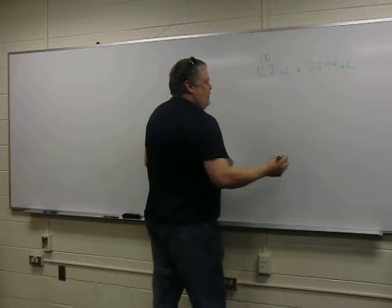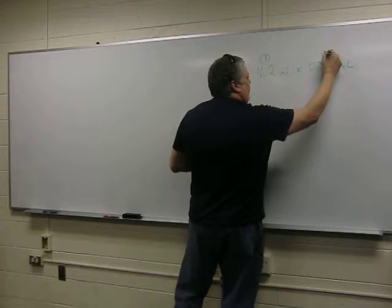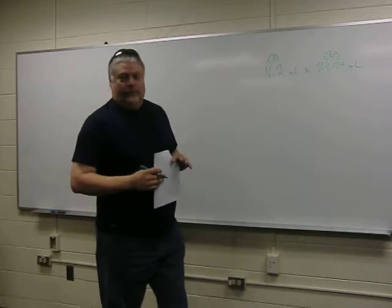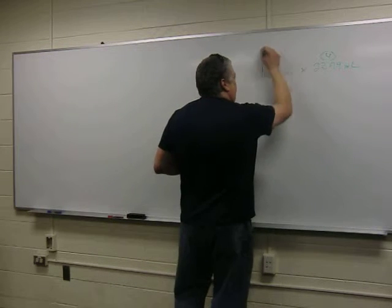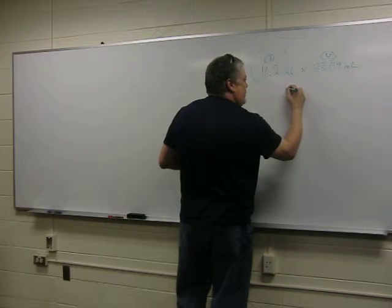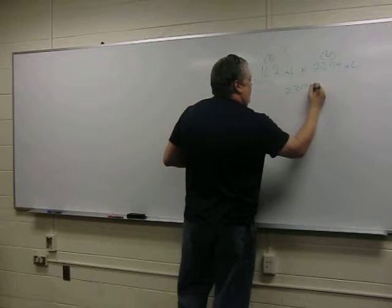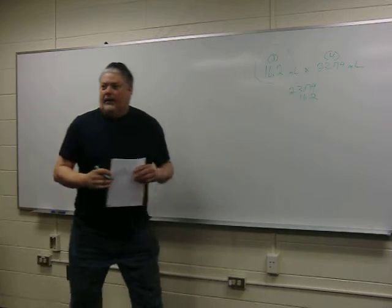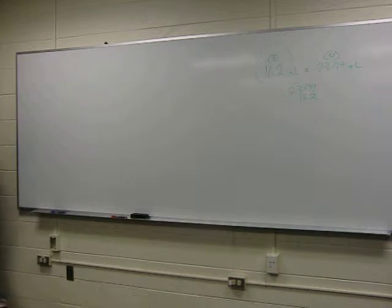How many do we have in the second one? Four. Correct. So which one of these are we going to use to determine our answer? Three. Always use the least amount of significant figures. So 23.79 times 16.2. Somebody with the calculator handy? 385.398.